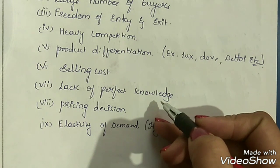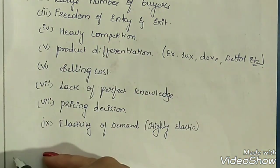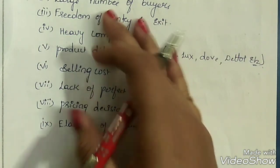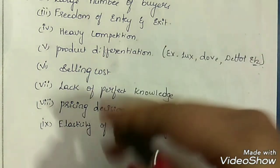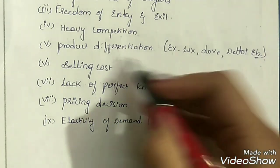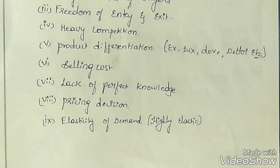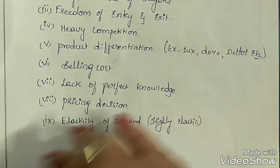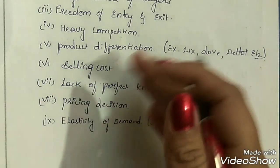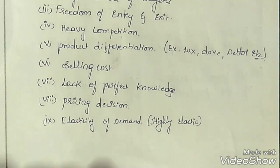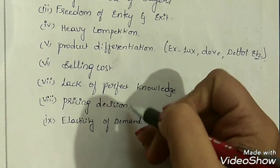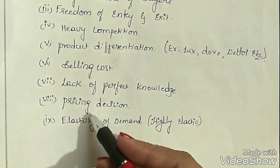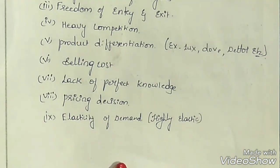Next feature is lack of perfect knowledge. There will be lots of different products and many brands and companies selling in this type of market. A buyer or consumer is not capable of having perfect knowledge of each and every product, hence there is a lack of perfect knowledge among the buyers. Next, pricing decision: in this type of market, prices are not decided by the industry — they are decided by the firm itself. The firm can influence or change the price according to demand, supply, or competition in the market. In perfect competition, price was decided by the industry, but here the firm has the decision-making power regarding the price of the product.